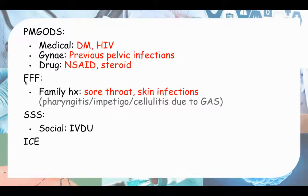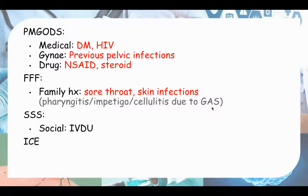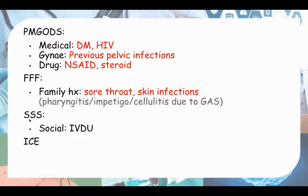FFF stands for Family history, Family planning, and Finance. For family history, ask about any family history of sore throat or skin infections - trying to elicit pharyngitis, impetigo, or cellulitis due to Group A Strep. Group A Strep is the most common pathogen for puerperal sepsis, so a family member with this infection may have passed it to the pregnant woman. Low socioeconomic status is also a risk factor.